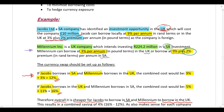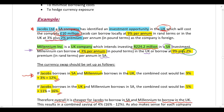The problem is that if Jacobs borrows in South Africa, they get rands — but they need pounds for the 10 million pound UK investment. Similarly, if Millennium borrows in the UK, they get pounds — but they need rands to invest in South Africa. This is where the currency swap comes in.